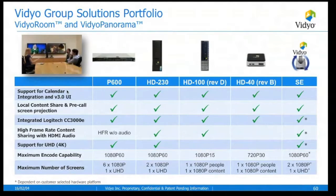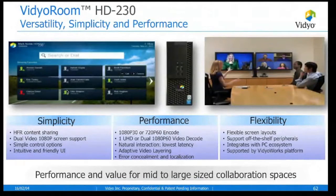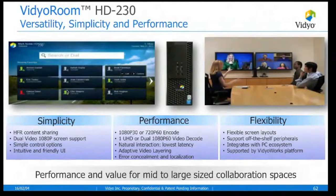The HD230 is the high-end room system, supporting dual 1080p screens or a single 4K display. It's also able to encode at 1080p 30, and is really suited for high-end auditorium environments or large boardrooms where you want all the bells and whistles. The deployment can be either a dual-screen environment or with a single 4K screen.